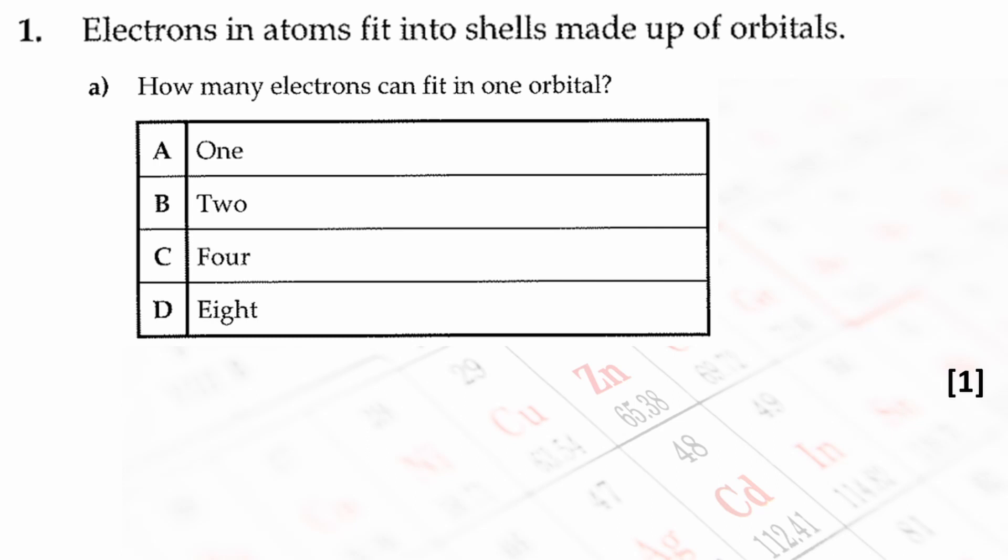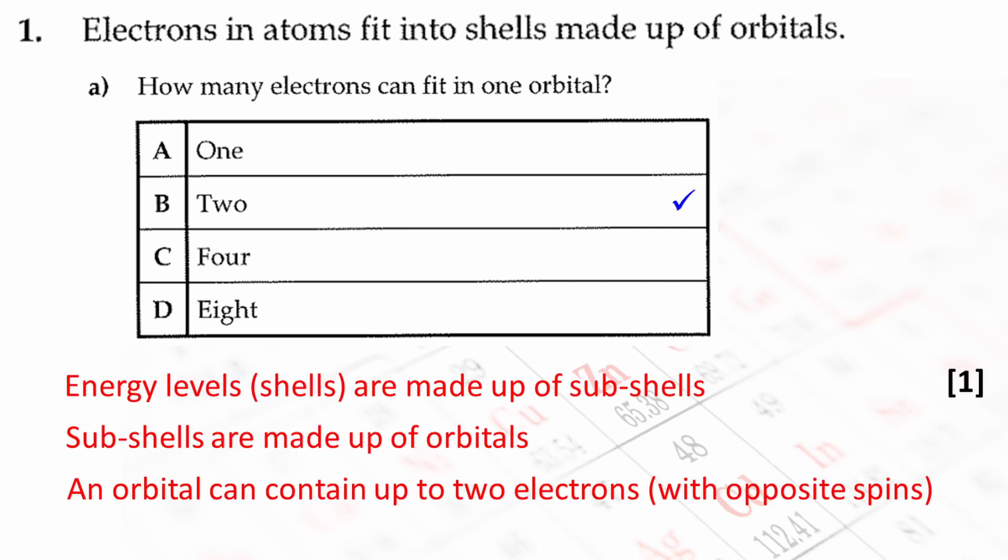Here's the first question. How many electrons can fit in one orbital? Energy levels are sometimes called shells and they are made up of subshells. Subshells are made up of orbitals. An orbital is a region that can contain up to two electrons with opposite spins. So the answer is B, 2.